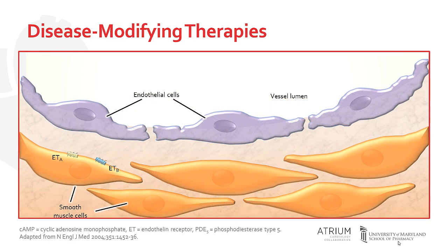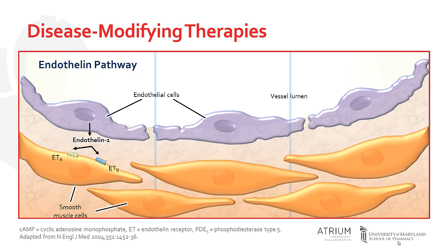A number of disease-modifying therapies have been developed to reverse the pulmonary vasoconstriction that occurs in PAH. These therapies work on one of three major pathways. The first we'll discuss is the endothelin pathway. Patients with PAH have excess circulating concentrations of endothelin-1, which leads to vasoconstriction and smooth muscle proliferation. Endothelin receptor antagonists, such as bosentan, inhibit endothelin receptors to prevent this process.